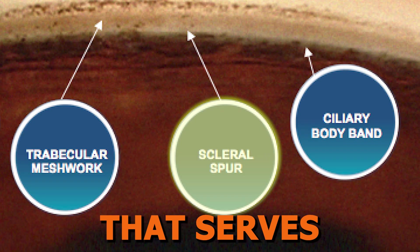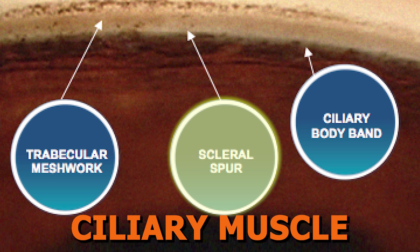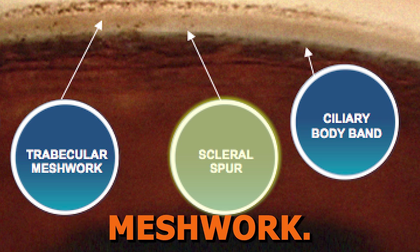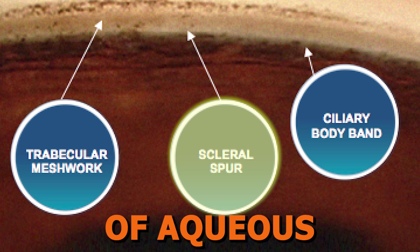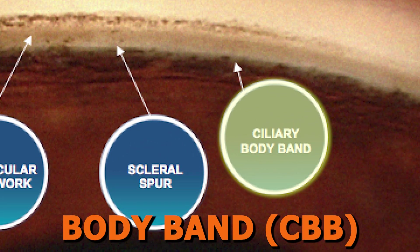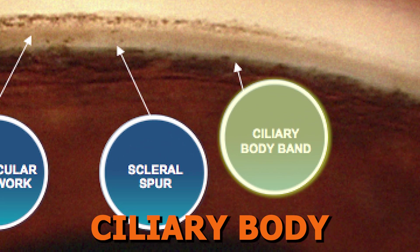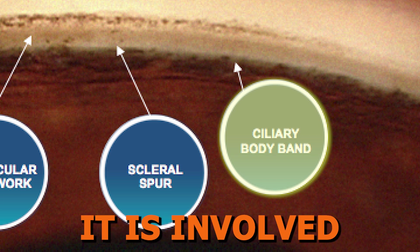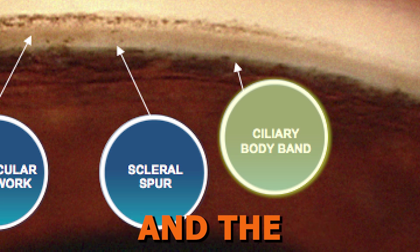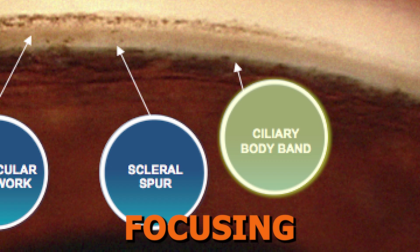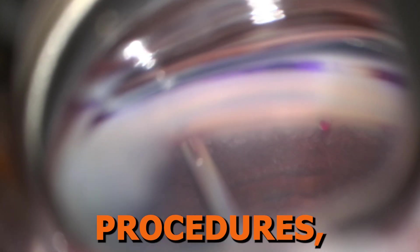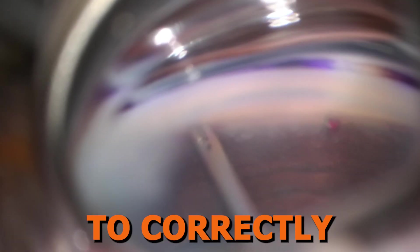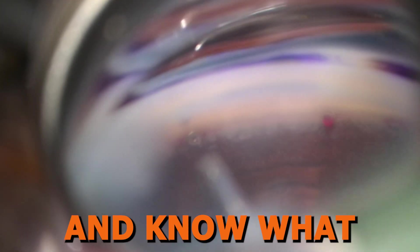The scleral spur is a ridge of collagenous tissue that serves as an attachment point for the ciliary muscle and the trabecular meshwork, and it plays a role in the outflow of aqueous humor. The ciliary body band is the visible portion of the ciliary body seen through gonioscopy, involved with aqueous humor production and the regulation of lens shaping for focusing. While performing MIGS procedures, it is of utmost importance to know and understand this angle anatomy to correctly perform the procedure and know what to target and what to avoid.